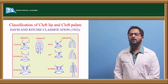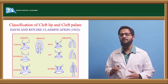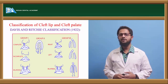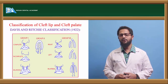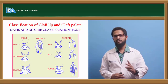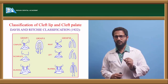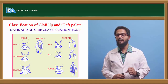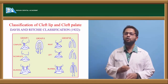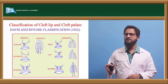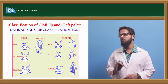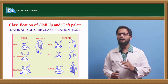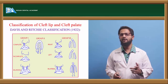Coming to classification — a number of authors have given classifications to simplify the understanding of clefts. The first classification was given in 1922 by Davies and Ritchie, dividing clefts into three groups. Group 1 are all pre-alveolar clefts, meaning clefts of the lip — unilateral, bilateral, or median. Group 2 are all post-alveolar clefts — clefts of the hard palate and soft palate. Group 3 are complete clefts involving the lip, alveolars, and both hard and soft palate — unilateral, bilateral, or median.